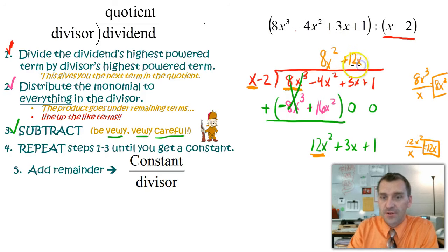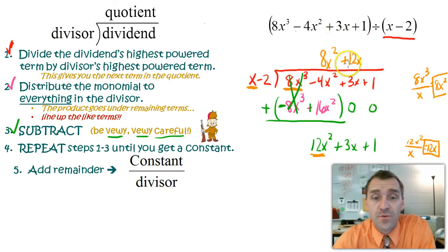And this guy here goes up here in my x to the first column. Why did I put a plus there? Because it's a positive 12. Sometimes you might get negative when you divide, and you put a subtraction. It's a negative 12. This one just happens to be a positive. That's why it's positive 12.